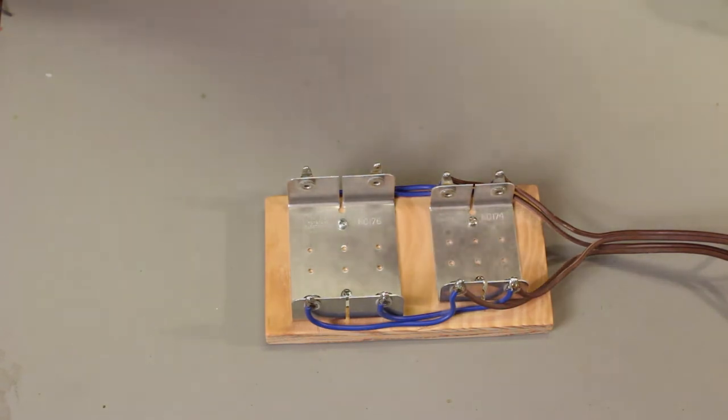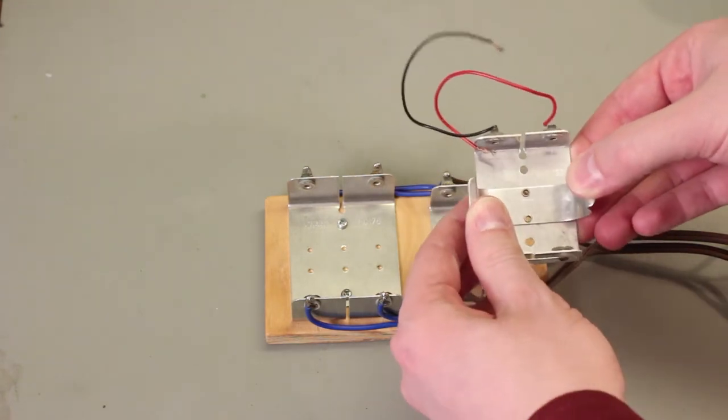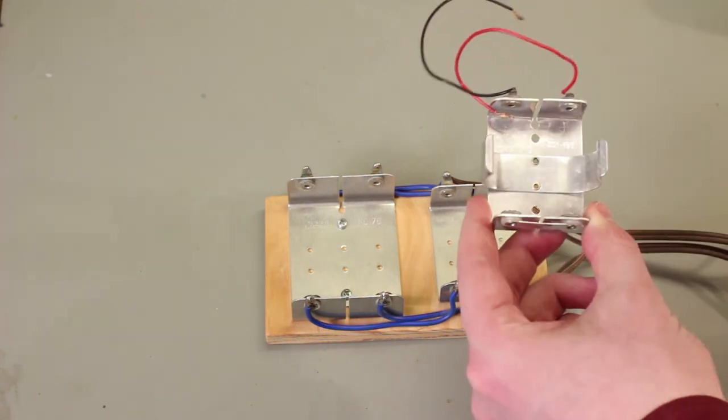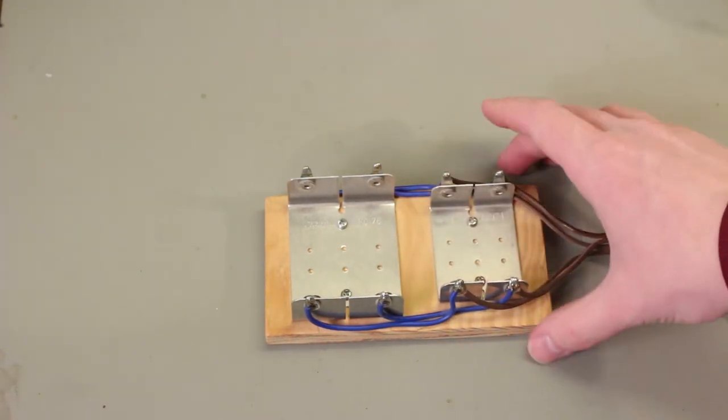When they came originally, here's an example. They had these metal springs that help hold the battery in place. In this case, I just drilled out those rivets and took those springs off and then screwed the holders right directly to this piece of scrap plywood.